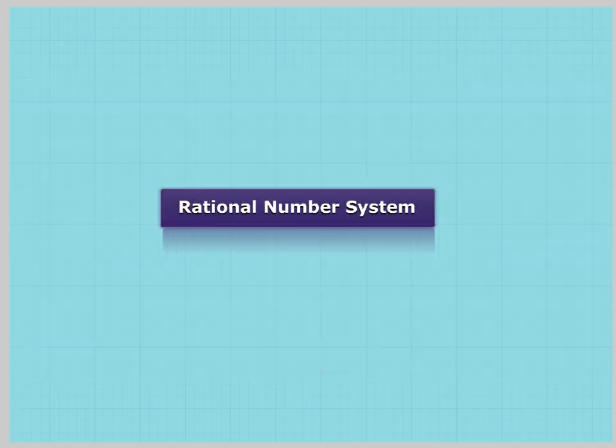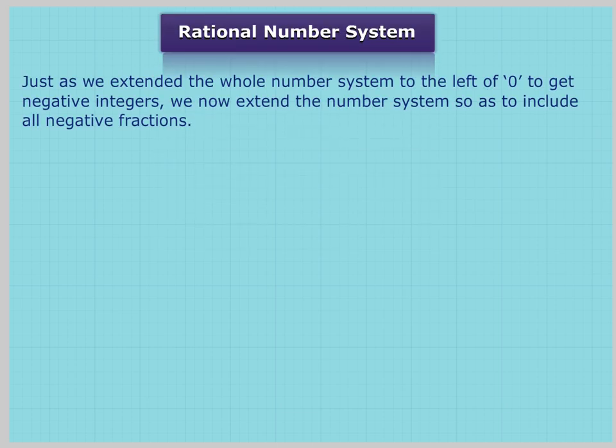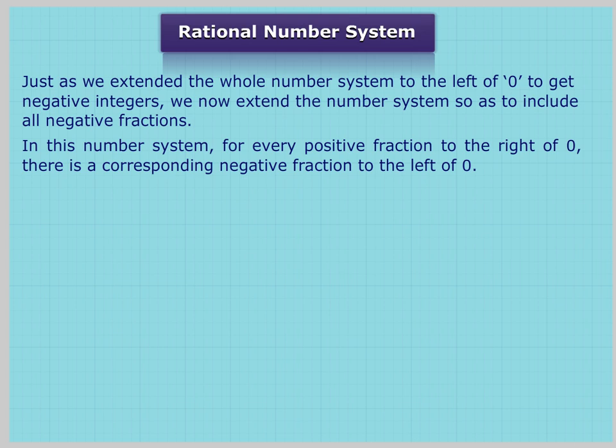RATIONAL NUMBER SYSTEM. Just as we extended the whole number system to the left of 0 to get negative integers, we now extend the number system so as to include all negative fractions. In this number system, for every positive fraction to the right of 0, there is a corresponding negative fraction to the left of 0.